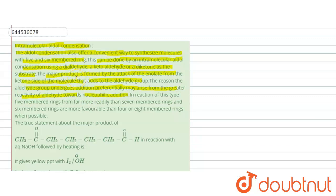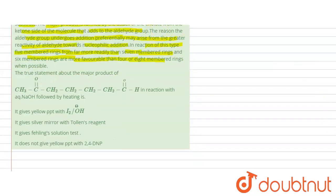The reason the aldehyde group undergoes addition preferentially may arise from the greater reactivity of aldehyde towards nucleophilic addition. Five membered rings are more readily favored than seven membered rings, and six membered rings are more favorable than four or eight membered rings. The substrate given to us has an aldehyde group and a keto group. When the aldol condensation takes place, there is an attack on the carbonyl carbon — we need to determine which carbonyl carbon should undergo nucleophilic addition.